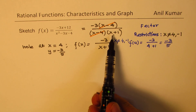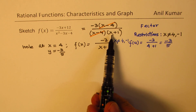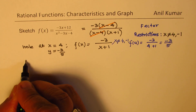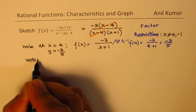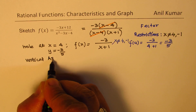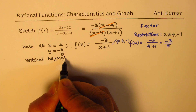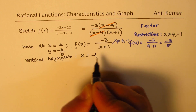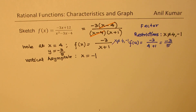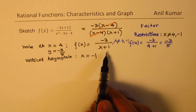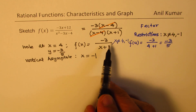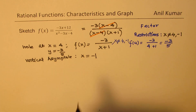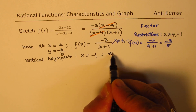The other restriction, x equals minus 1, leads to a vertical asymptote. So we get a vertical asymptote at x equals minus 1 — that is what makes the denominator 0. Now once you have the hole and the vertical asymptote, we can go for the horizontal asymptote.